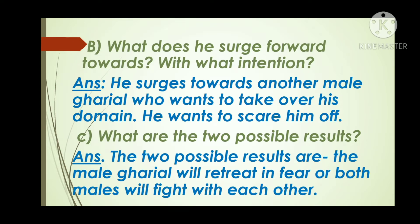Question B: What does he surge forward towards, and with what intention? He surges towards another male gharyal who wants to take over his domain. He wants to scare him off. Question C: What are the two possible results? The two possible results are the male gharyal will retreat in fear, or both males will fight with each other.